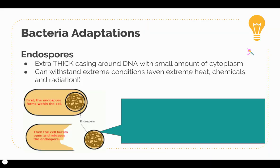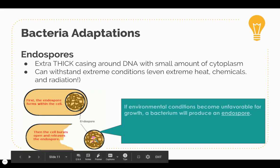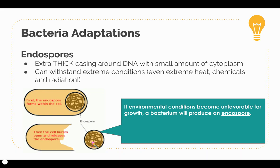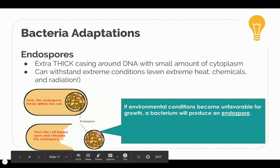The third adaptation we're going to look at is endospores. An endospore is a specific adaptation that some bacteria have the ability to form. If conditions become unfavorable for the bacterial cell — such as not enough food or moisture — the bacteria will preserve its DNA by forming a thick casing around it, which is the endospore. The cell will remain as an endospore until conditions become favorable again.